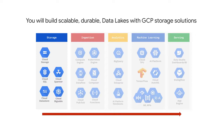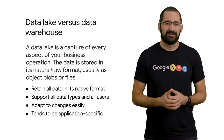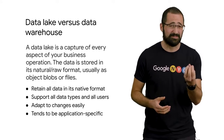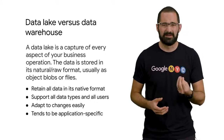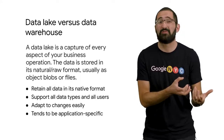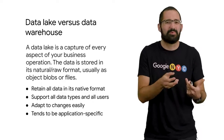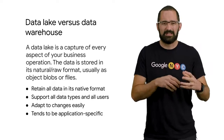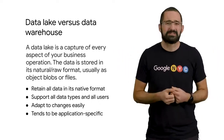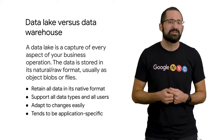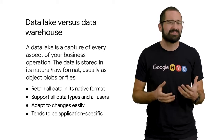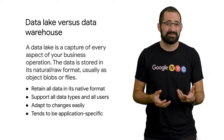A data lake is essentially that place where you've captured every aspect of your business's operations raw. Because you want to capture every aspect, you tend to store the data in its natural raw format — the format that's thrown out by your applications. You might have a log file, and all those log files and other raw data files all get jammed together inside of your data lake. You can basically store anything that you want, in any format, so you tend to store things like object blobs or files.